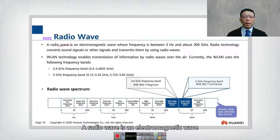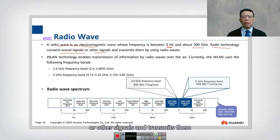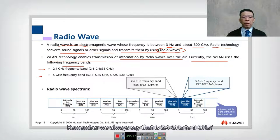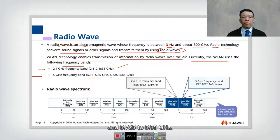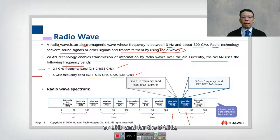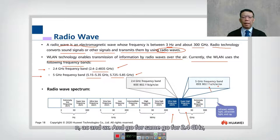A radio wave is an electromagnetic wave whose frequency is between 3 Hz to 300 GHz. Radio technology converts sound signals or other signals and transmits them using radio waves. WLAN technology enables transmission of information by radio wave over the air. The frequencies we use are: 2.4835 GHz, 5.1–5.35 GHz, and 5.725–5.85 GHz. The frequency used by WLAN at 2.4 GHz is called Ultra High Frequency (UHF), and the 5 GHz band is called Super High Frequency. For 5 GHz, we use standards A, N, AC, and AX.